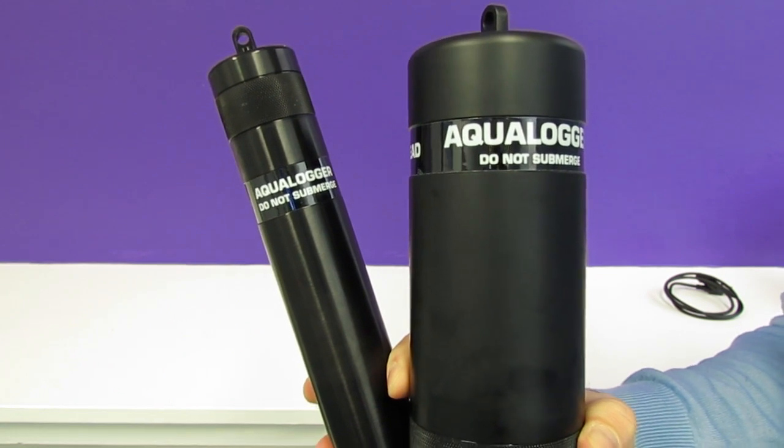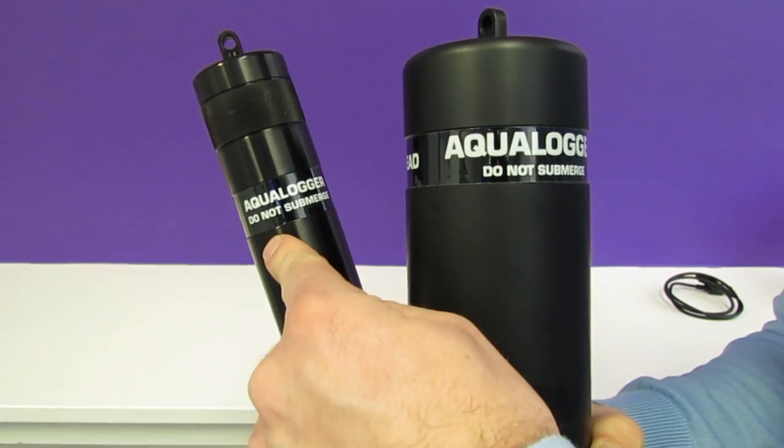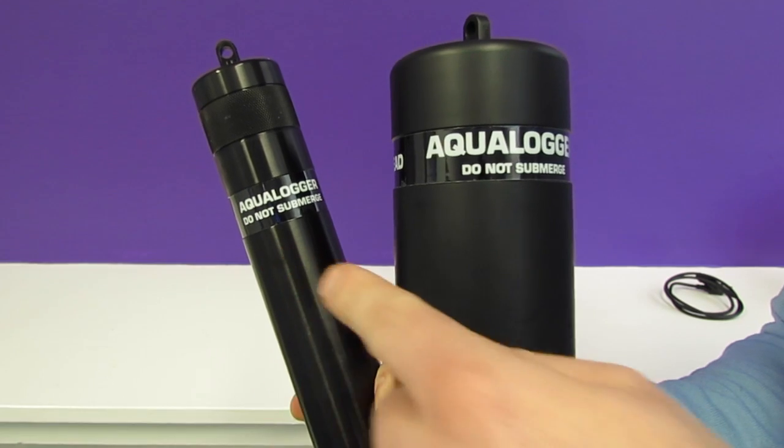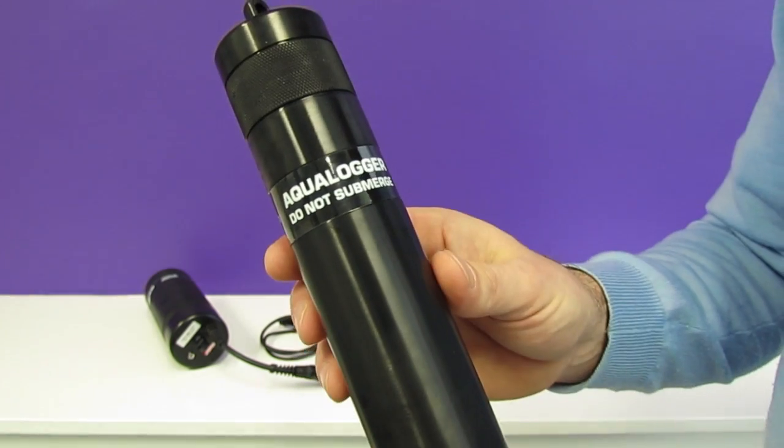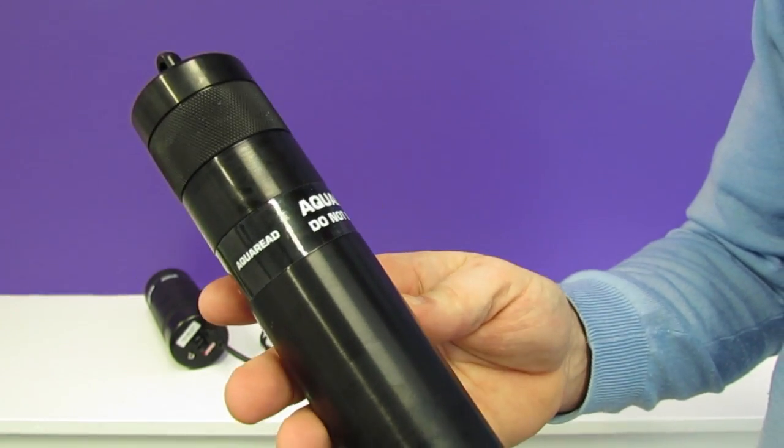Now I'm going to introduce you to our two aqua loggers. We have here the aqua logger 2000 and the aqua logger 7000. The aqua logger 2000 is designed to be used with the AP light and the AP 2000 aqua probes.